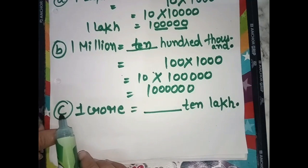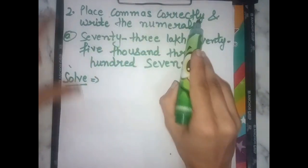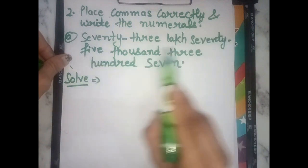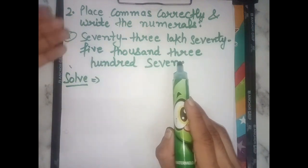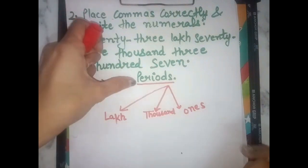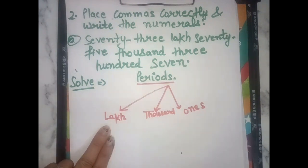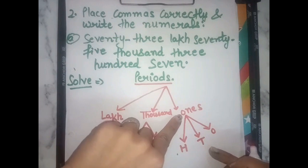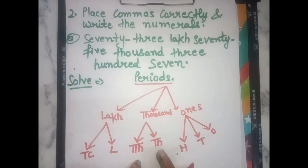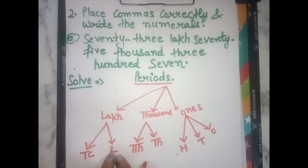Part C — write the numerals correctly. The first question is 73 lakh, 75 thousand, 307. We will solve this using periods. We have three periods: the ones period has hundreds, tens, ones; the thousands period has thousands, ten thousands, lakhs; and the lakhs period has lakh and ten lakh.